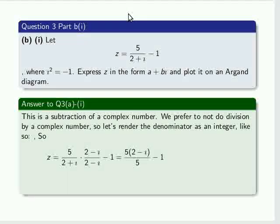we see that the denominator turns into 5, and it will cancel with the top, with the 5 on the top. And then we have to subtract minus 1,